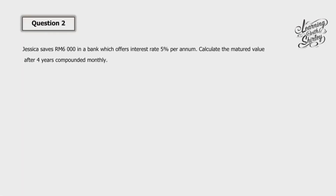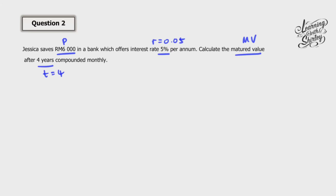Let's look at question number 2. Jessica saves 6,000 ringgit in a bank which offers interest rate 5% per annum. Calculate the matured value after 4 years compounded monthly. So P is 6,000, interest rate R is 0.05, T equals 4, and compounded monthly means N equals 12.